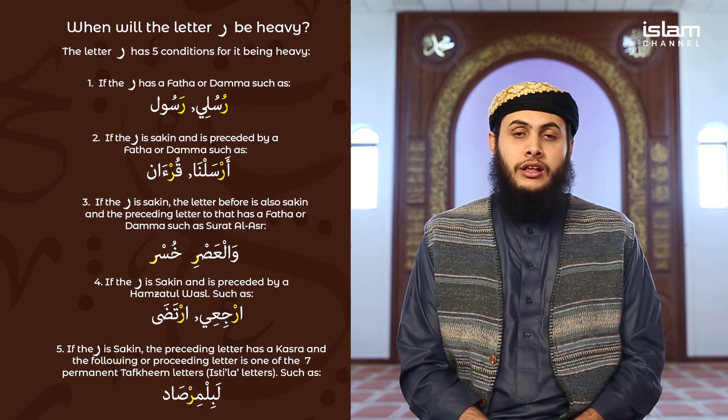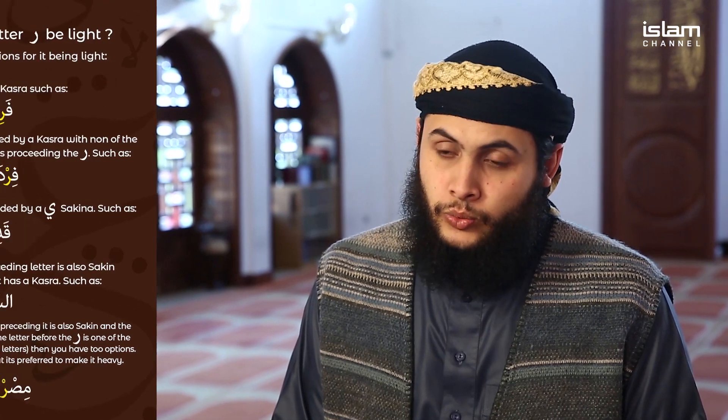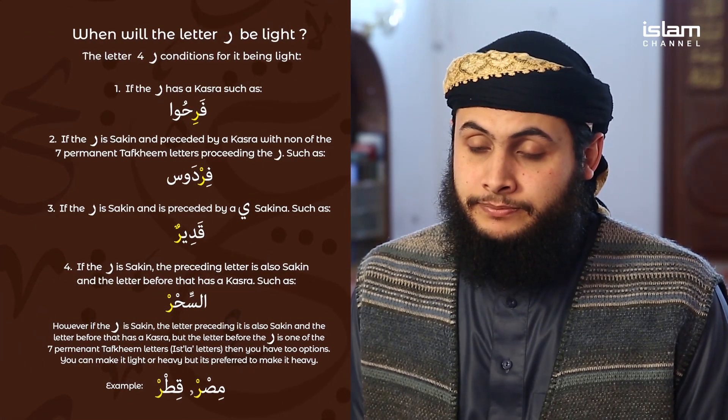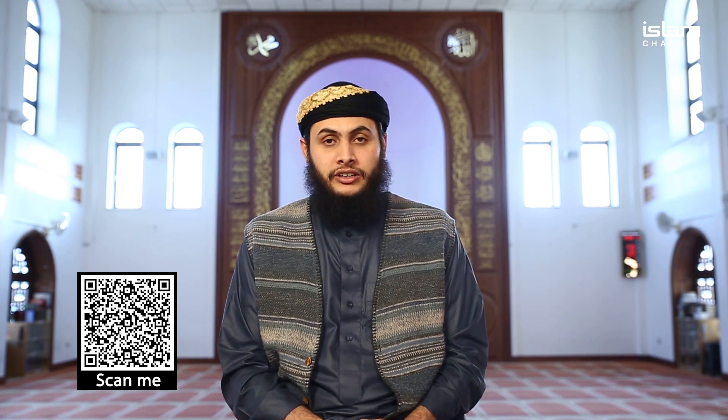The fifth and final condition for the ra being heavy is when the ra is sakin, the letter before it has a kasrah, and the letter after it is one of the seven permanent tafkhim letters. An example of this is in Surah Al-Fajr: 'inna rabbaka labil mirsaad.' Today we are going to speak about the conditions for the ra being light. The letter ra has four conditions when it will be light.